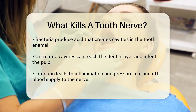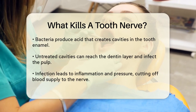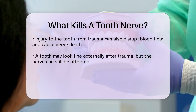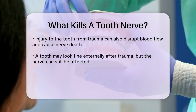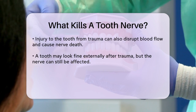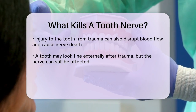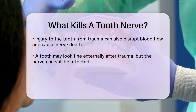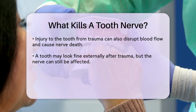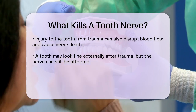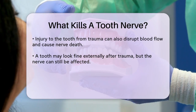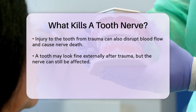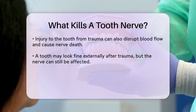Another significant cause is injury to the tooth. If you get hit in the mouth — whether from a fall, a sports injury, or any other kind of trauma — it can disrupt the blood flow to the tooth. This trauma can cause the nerve to die, even if the tooth itself looks fine on the outside.